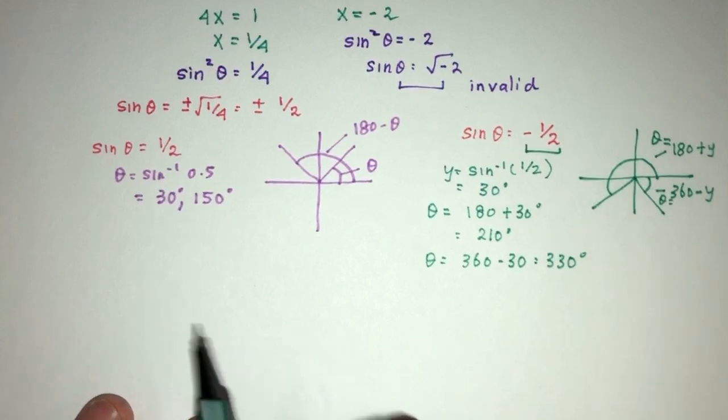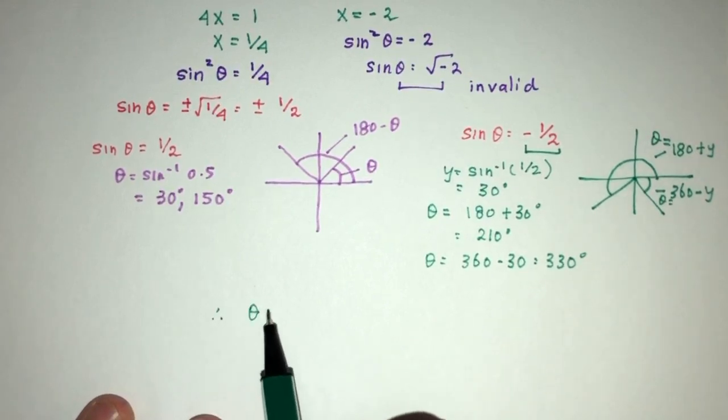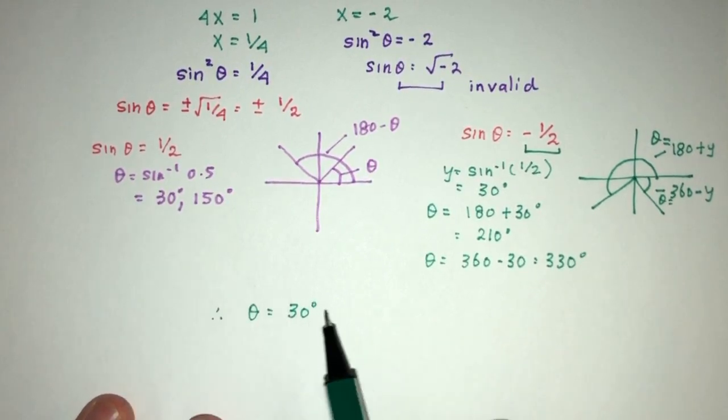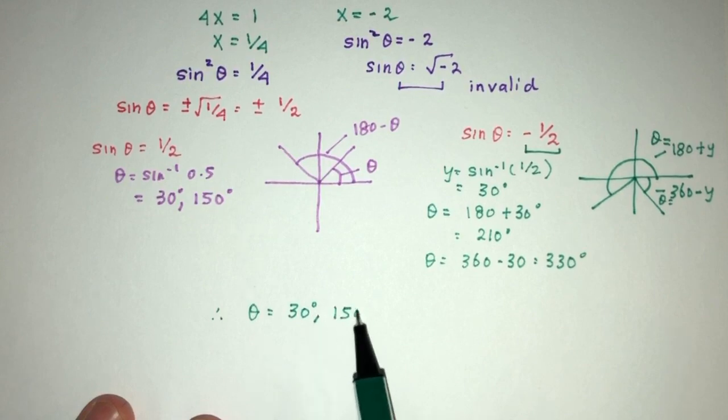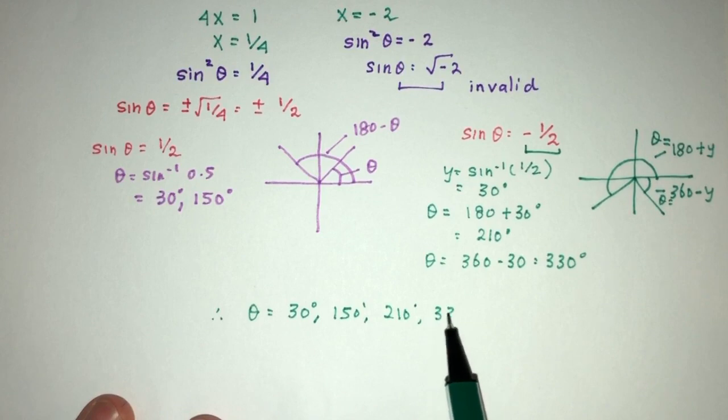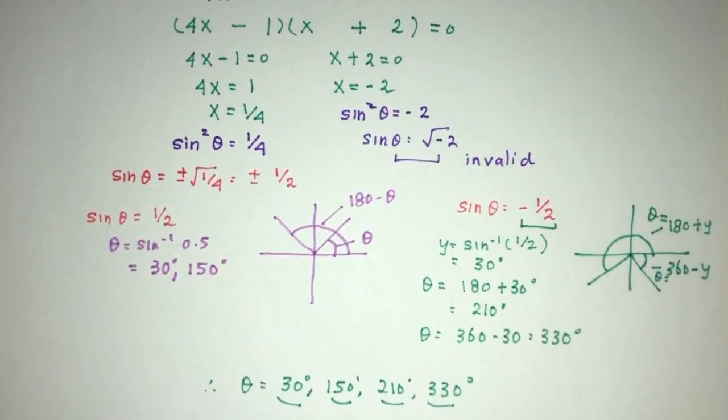So, as you can see, we will have a few answers here. θ will be 30 degrees will be 150, 210, and finally 330. So, we have four values for θ for this question involving trigonometry.